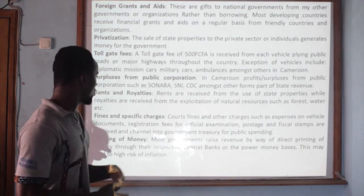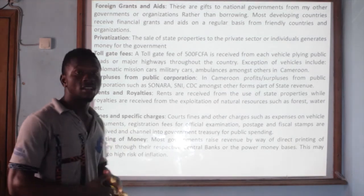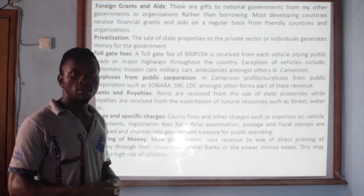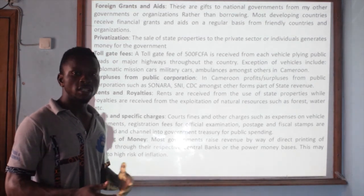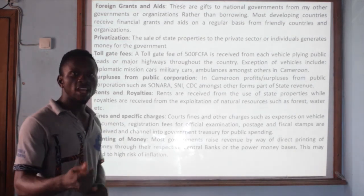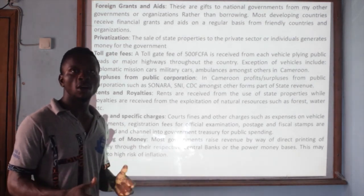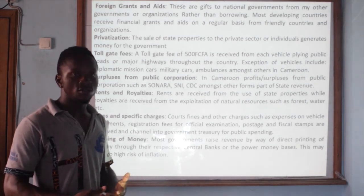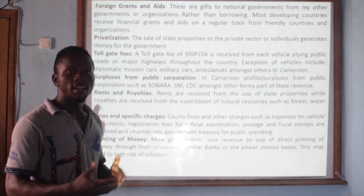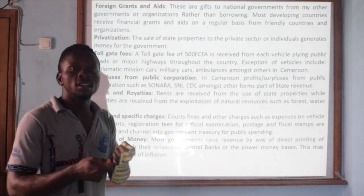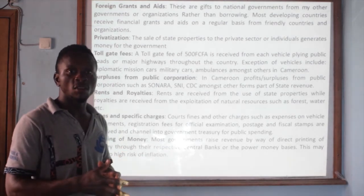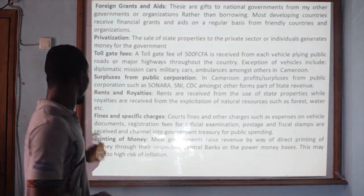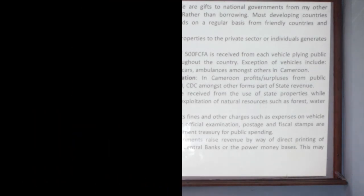Then we can talk about fines and specific charges. These are fines that the government receives — for example, fines given to people in court. When this money is paid it goes into the government, helping to raise revenue. And lastly, we can talk about the printing of money.